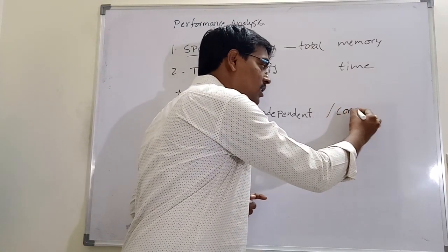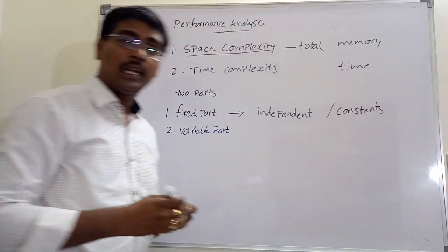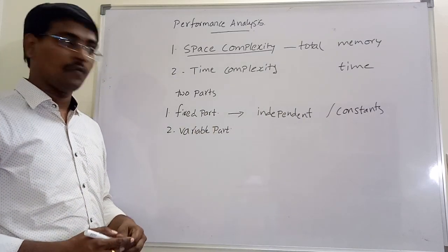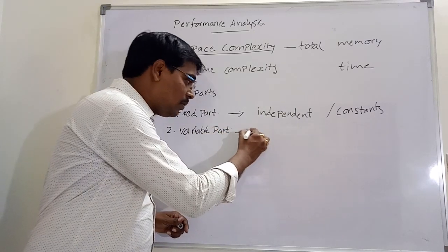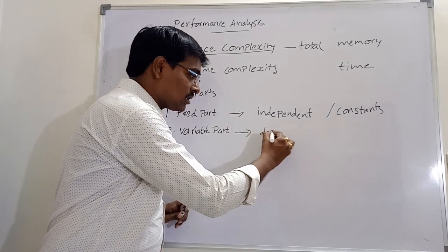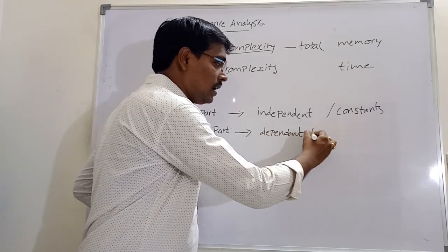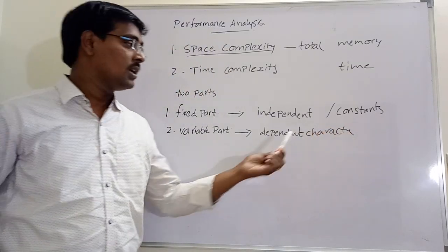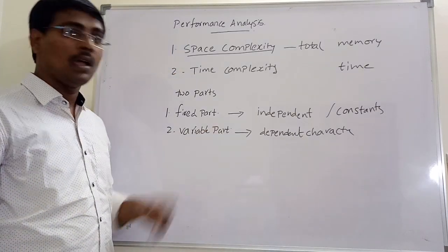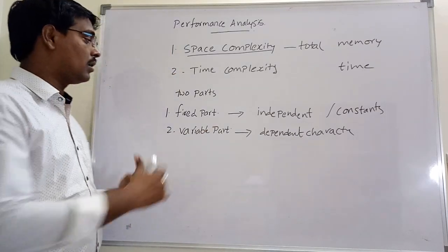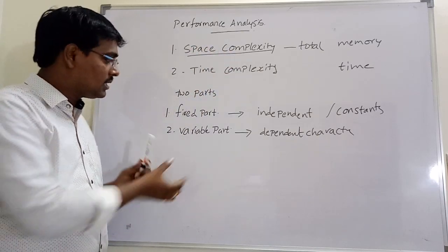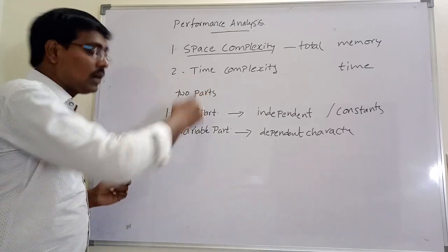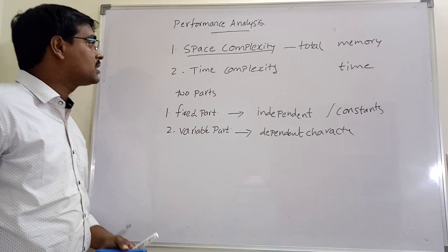The fixed part contains conditions, inputs, and outputs — that is, variables with independent characteristics. Variable part means dependent characteristics — a variable that depends on another variable, having instance characteristics. Space complexity for an algorithm is calculated using both the fixed part and the variable part.